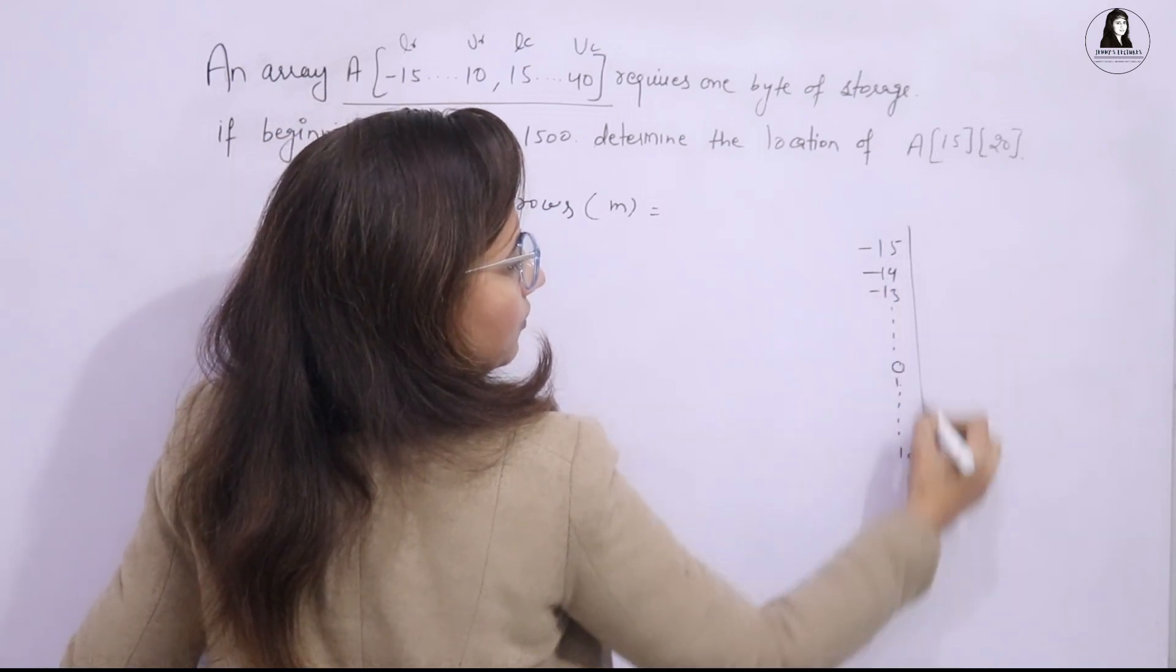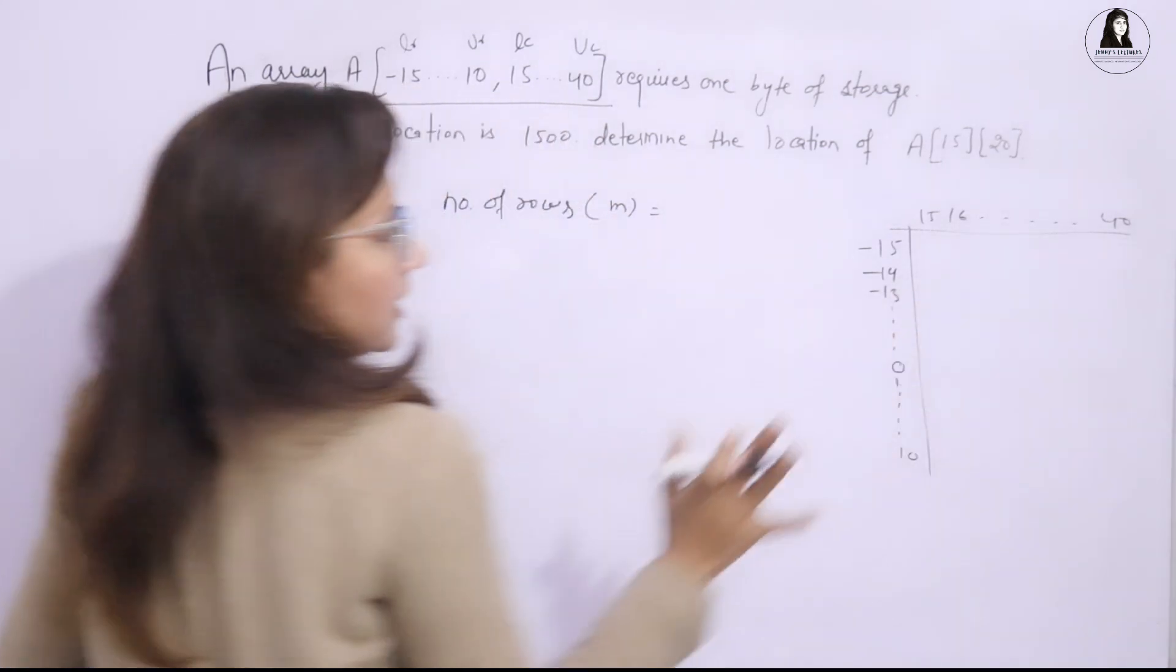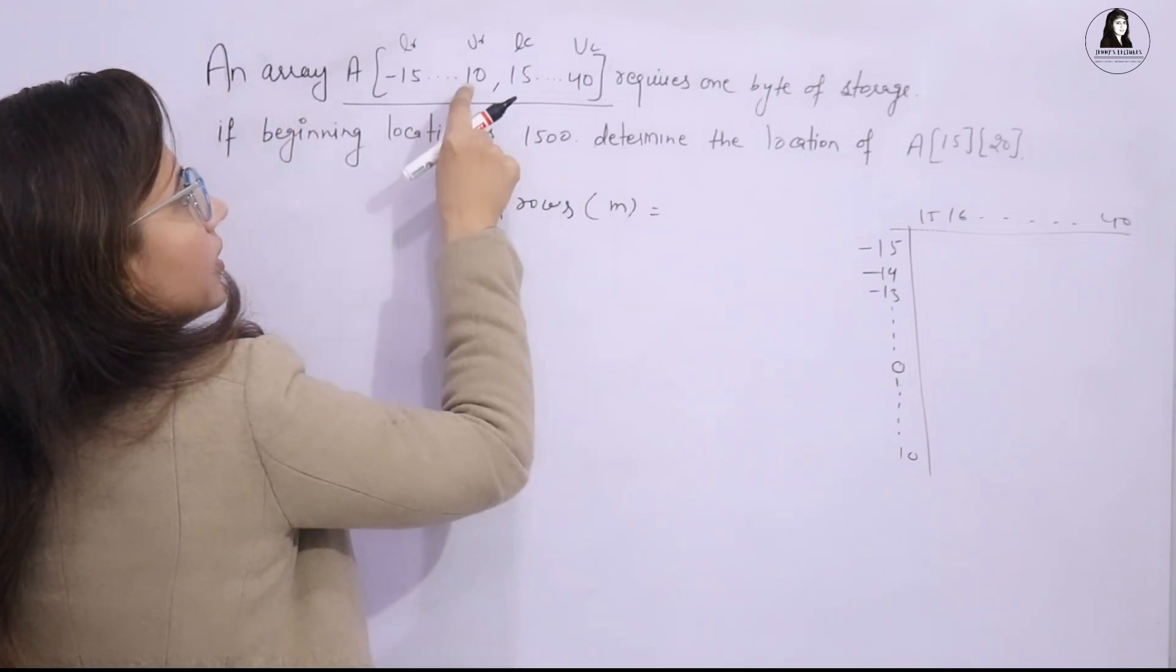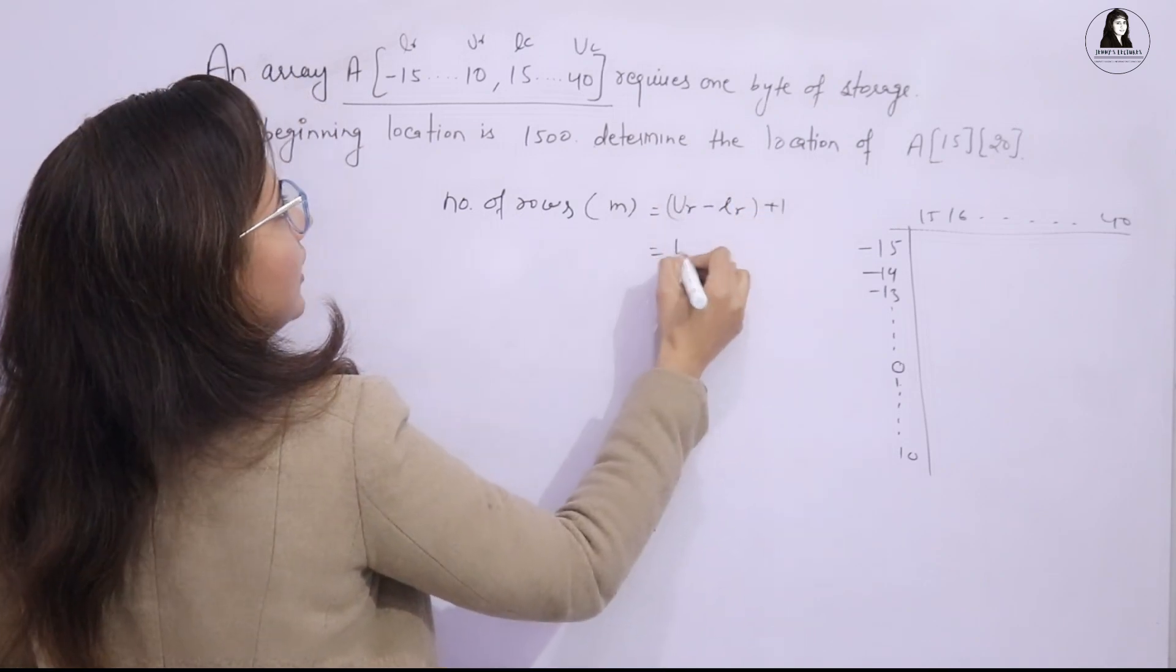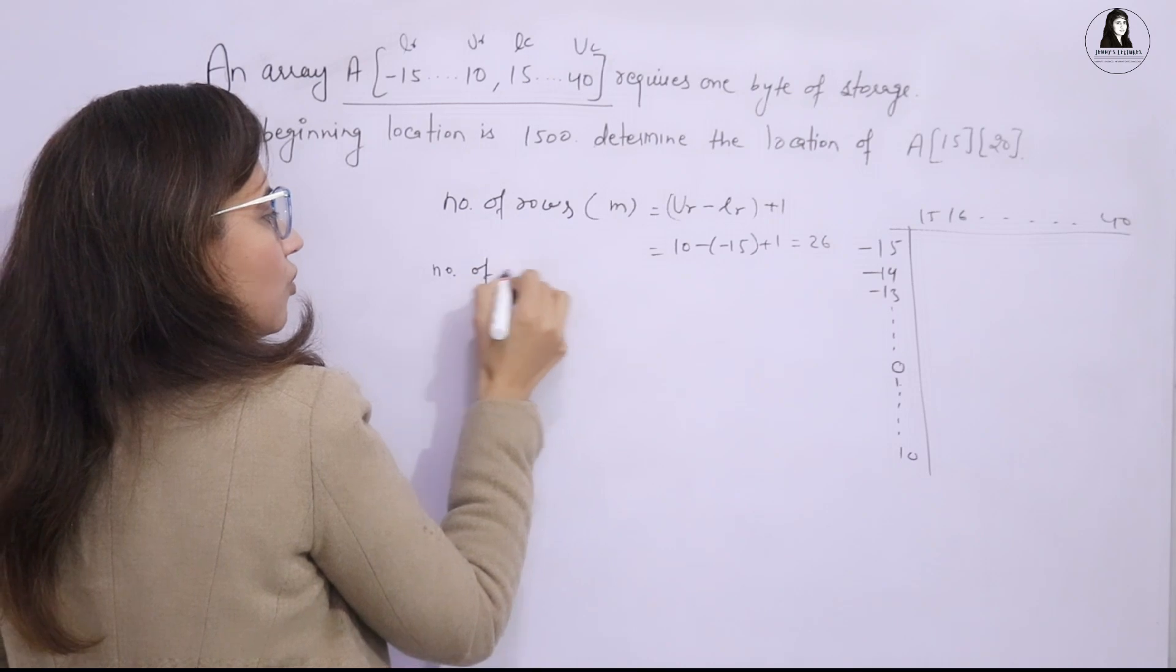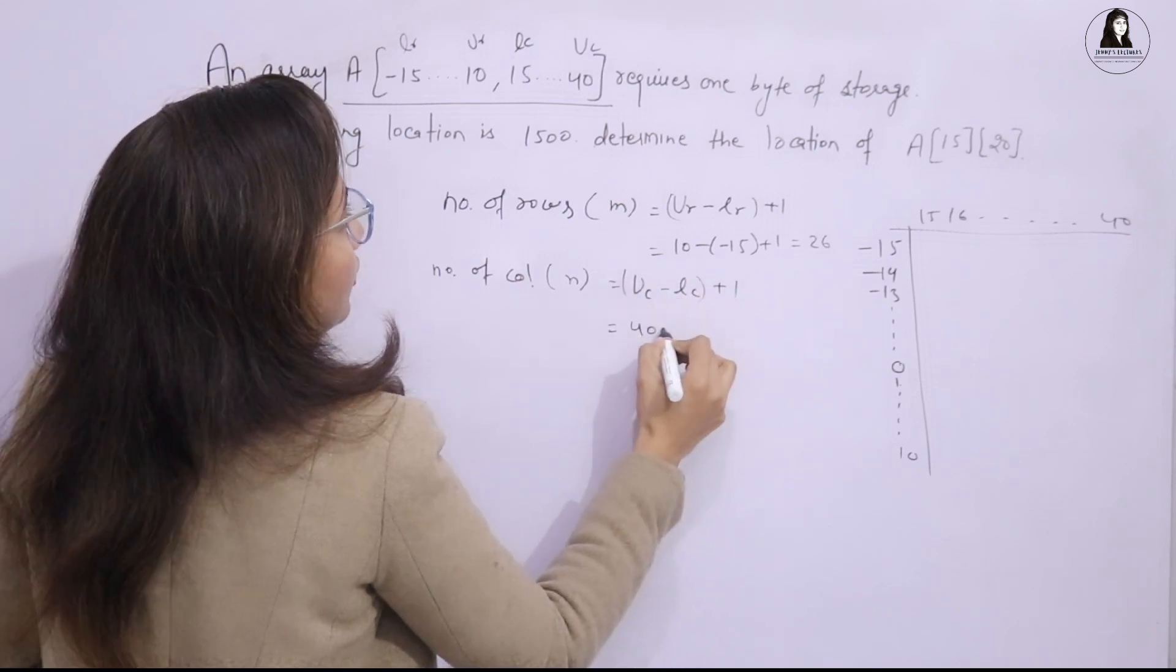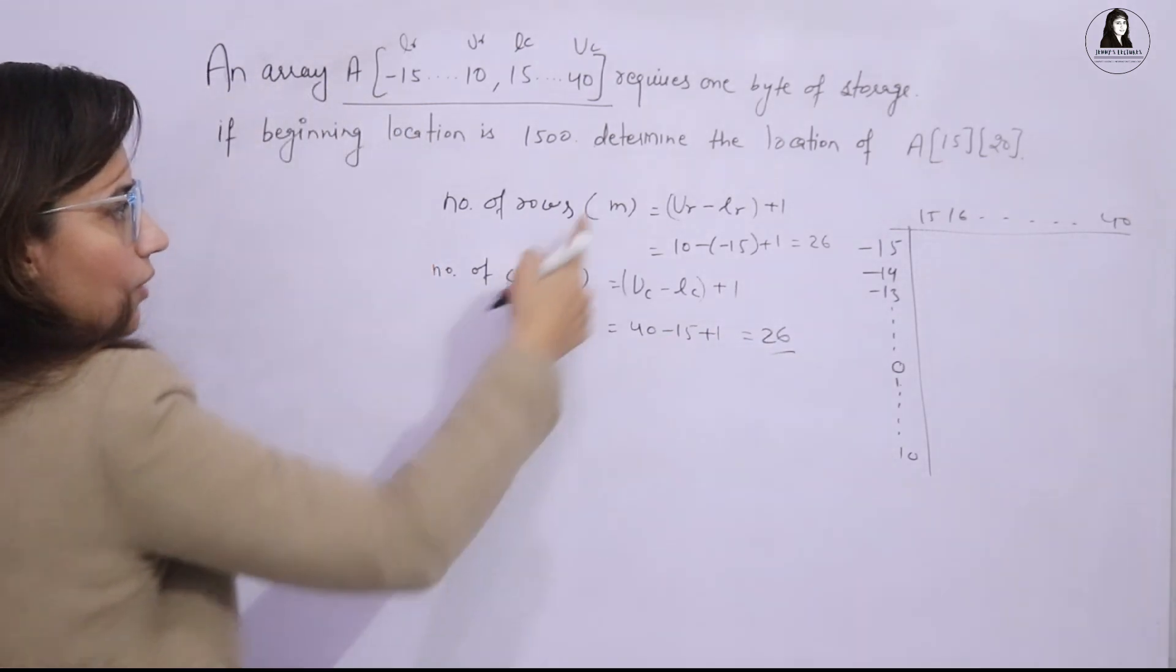If you draw this, it would be something like this: minus 15, minus 14, minus 13, up to 0, then up to 10. And here we have columns - column index is 15, 16, up to 40. Index is not from 0, row index and column index proper limit are given. So M would be UR minus LR plus 1, this would be 10 minus (-15) plus 1 and it would be 26. Same for number of columns, represented with N: UC minus LC plus 1, that would be 40 minus 15 plus 1, and this would be 26. So we have M and N.